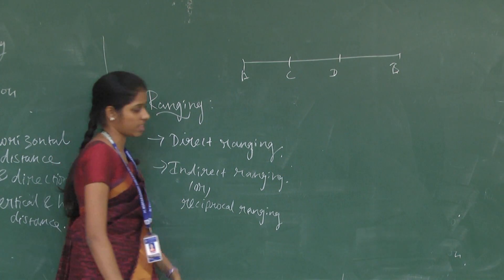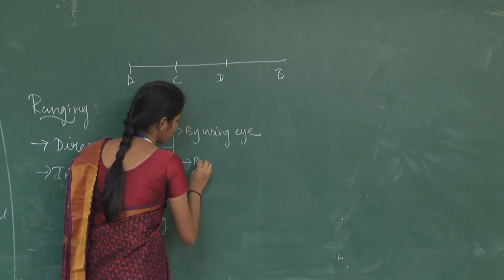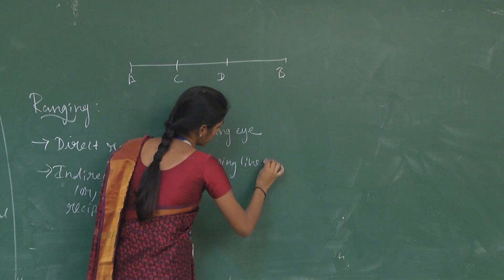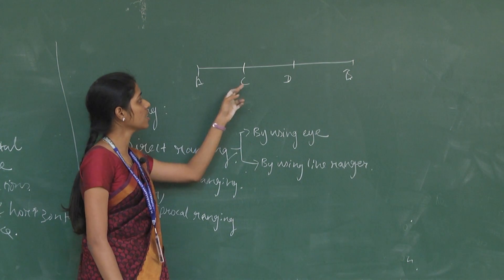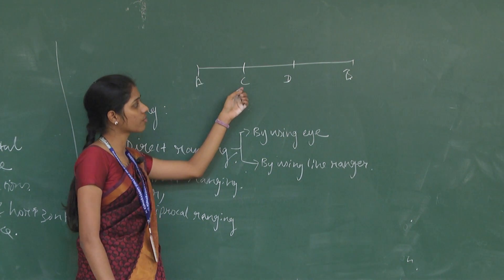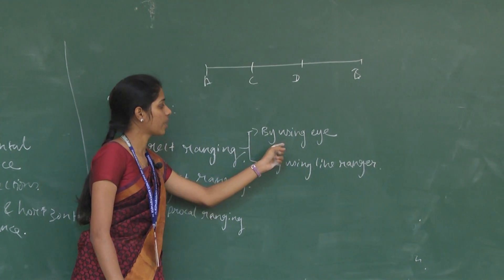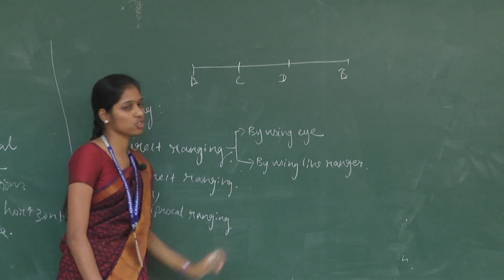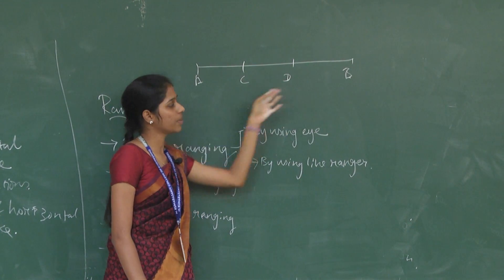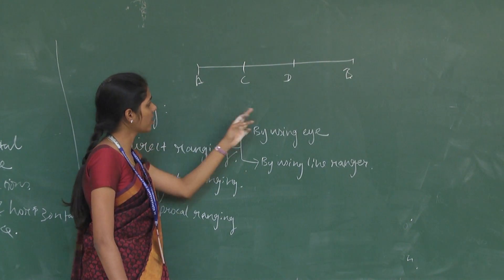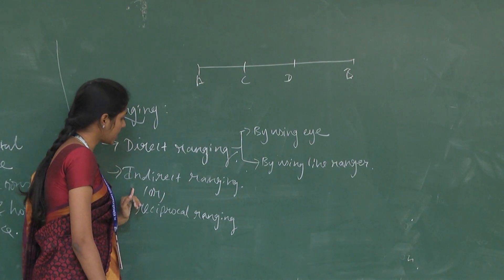Direct ranging is done by two methods: by eye and by using a line ranger. In the 'by eye' method, four people with ranging rods stand at stations A, C, D, and B. The person at A directs persons at C and D to move forward or backward until they are in line AB. In the 'line ranger' method, an instrument with two prisms is used — light from A coincides with the line from B at station C, allowing stations A, C, D, B to be aligned in a straight line.